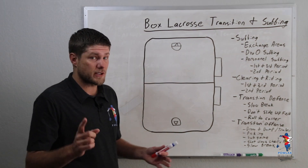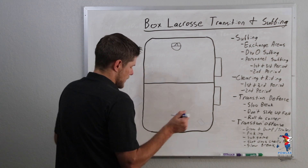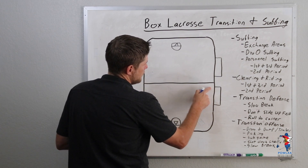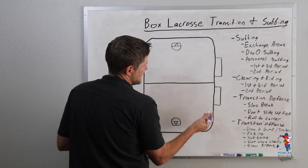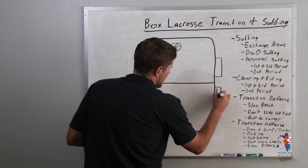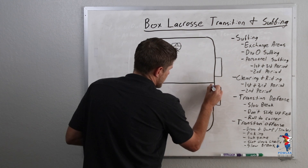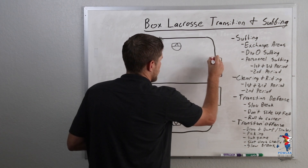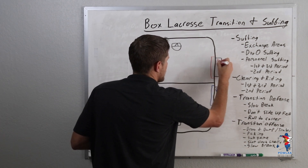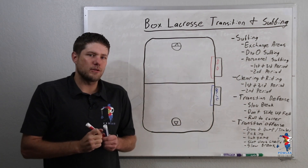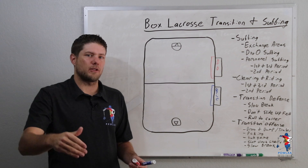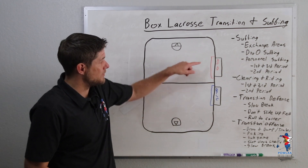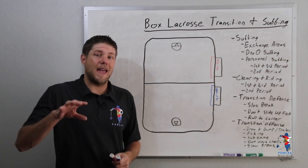As we get into the sub game, the first thing we have to cover is the exchange areas. If these are the boxes where all the players are going to line up, each exchange area is going to come out two feet out of the boards and extend two feet past each door. Players don't actually have to step into the bench to release another player — they just have to be inside this exchange area and be out of the play.